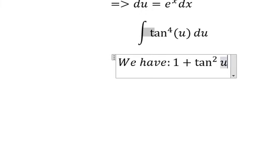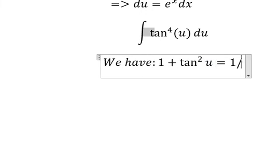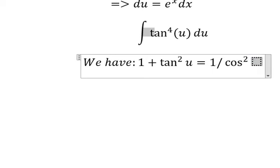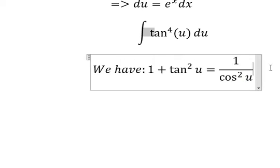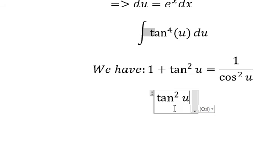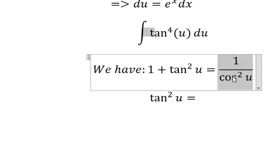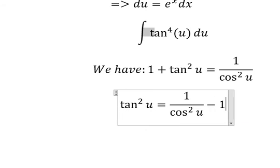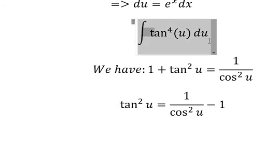And then we have tan u to the power of 2 equals 1 over cos u to the power of 2 minus 1. So in here we have tan u squared multiply with tan u squared.